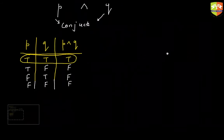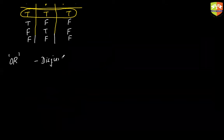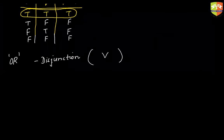The next connector we are going to talk about is the disjunction, or the OR connector. It is represented by the down-arrow symbol.